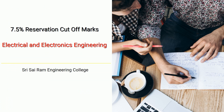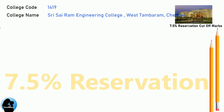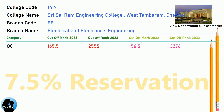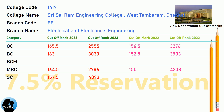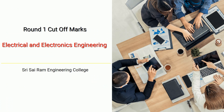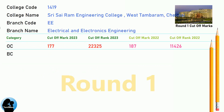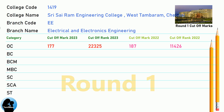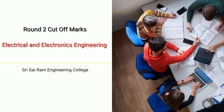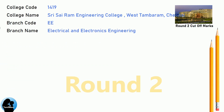DNA 7.5 Reservation Cut-off for Shri Sai Ram Engineering College in Electrical and Electronics Engineering. DNA 9.5 Reservation Cut-off for Shri Sai Ram Engineering College in Electrical and Electronics Engineering. DNA Round 2 Cut-off for Shri Sai Ram Engineering College in Electrical and Electronics Engineering.